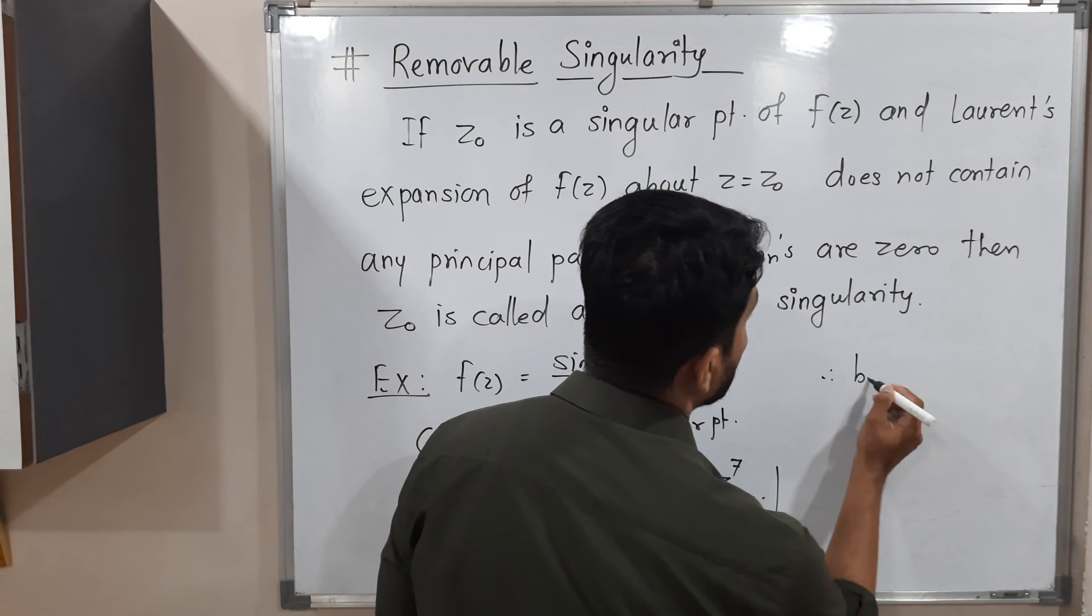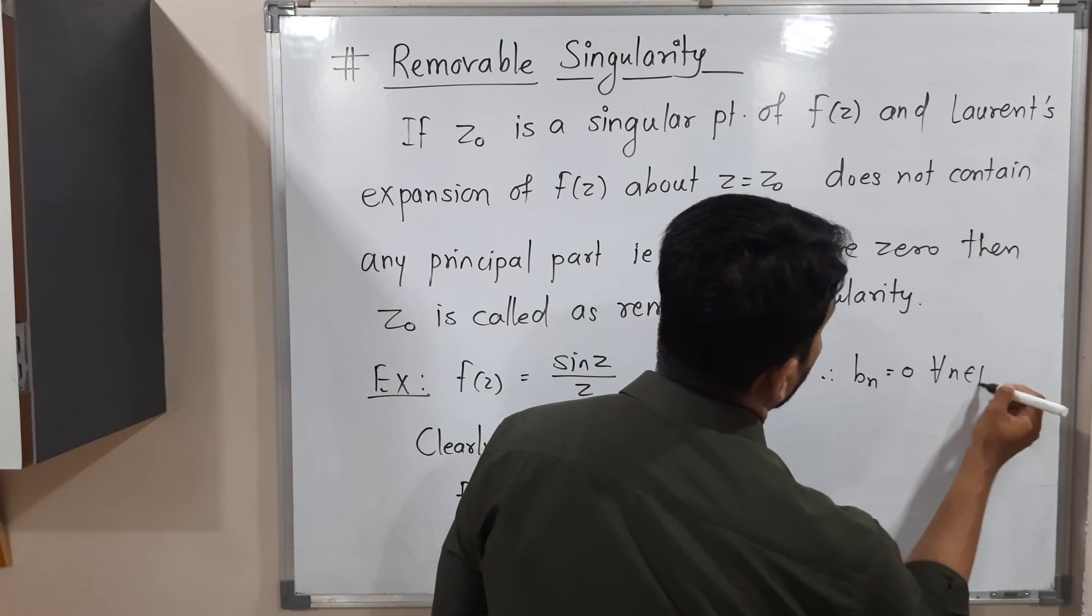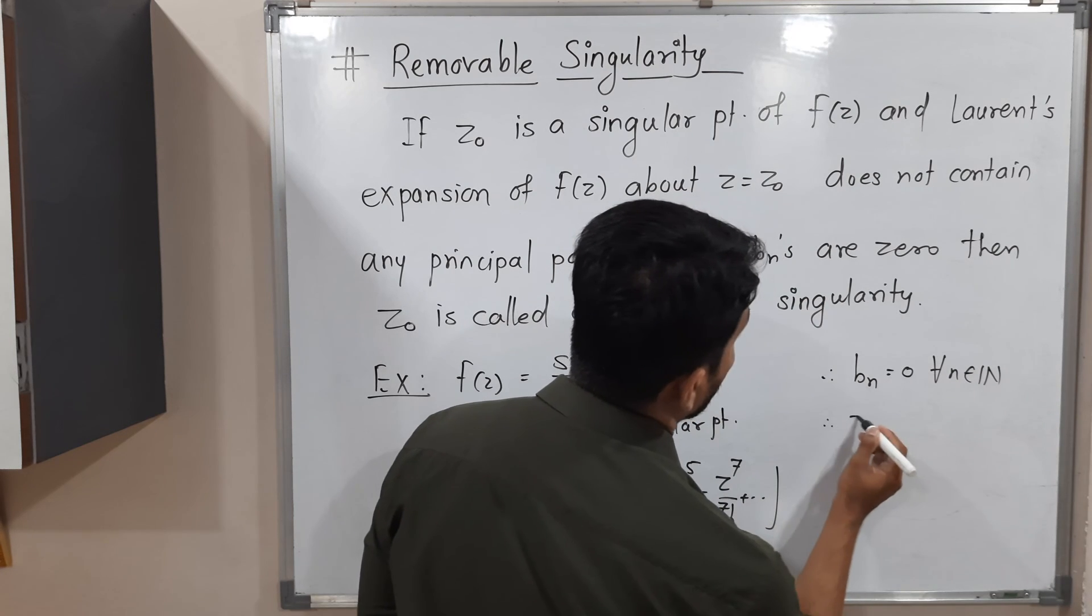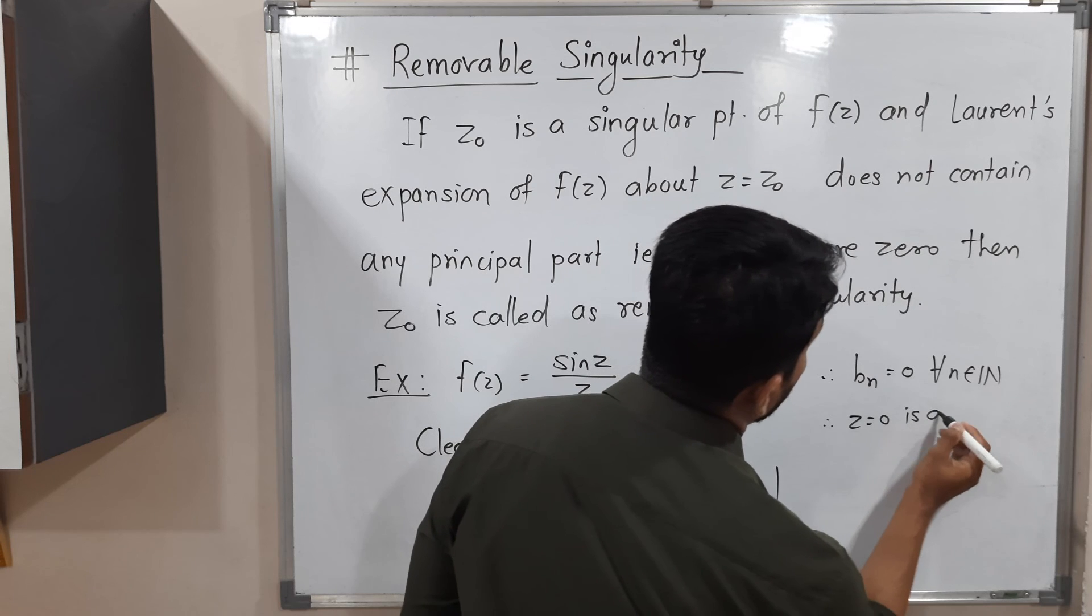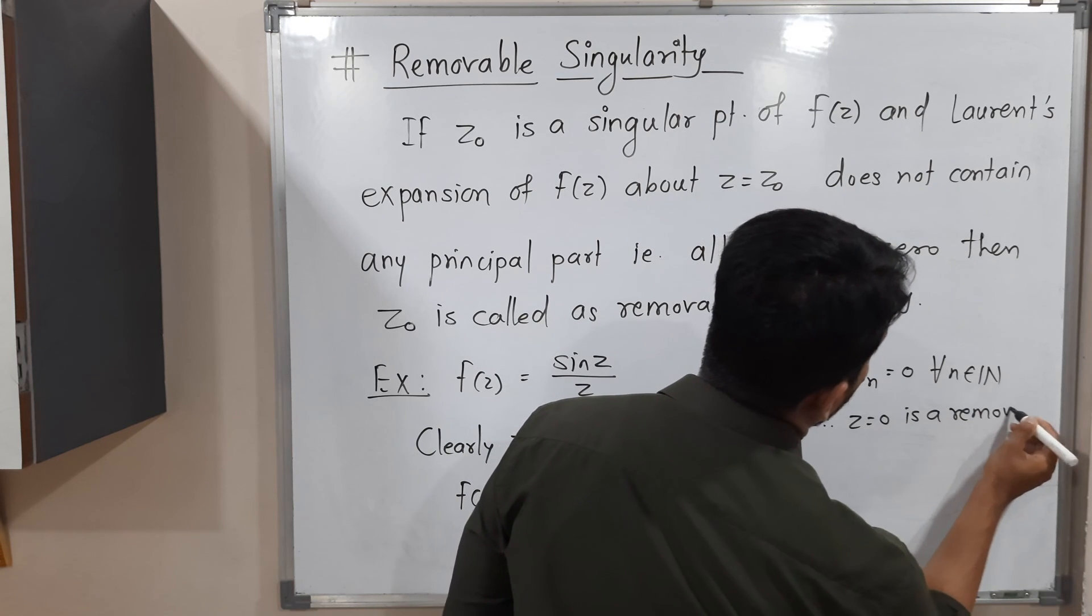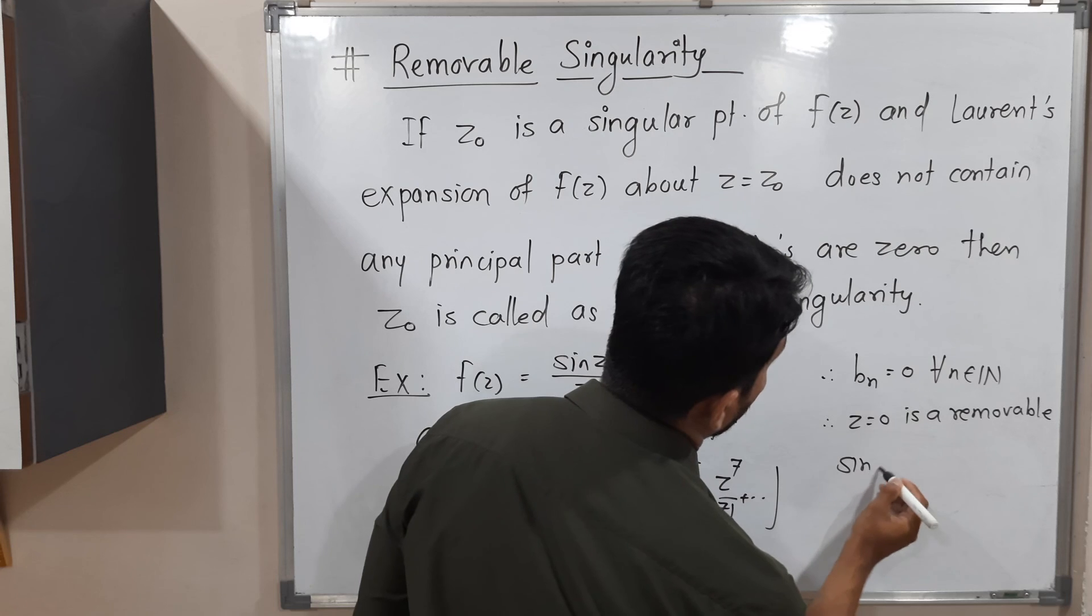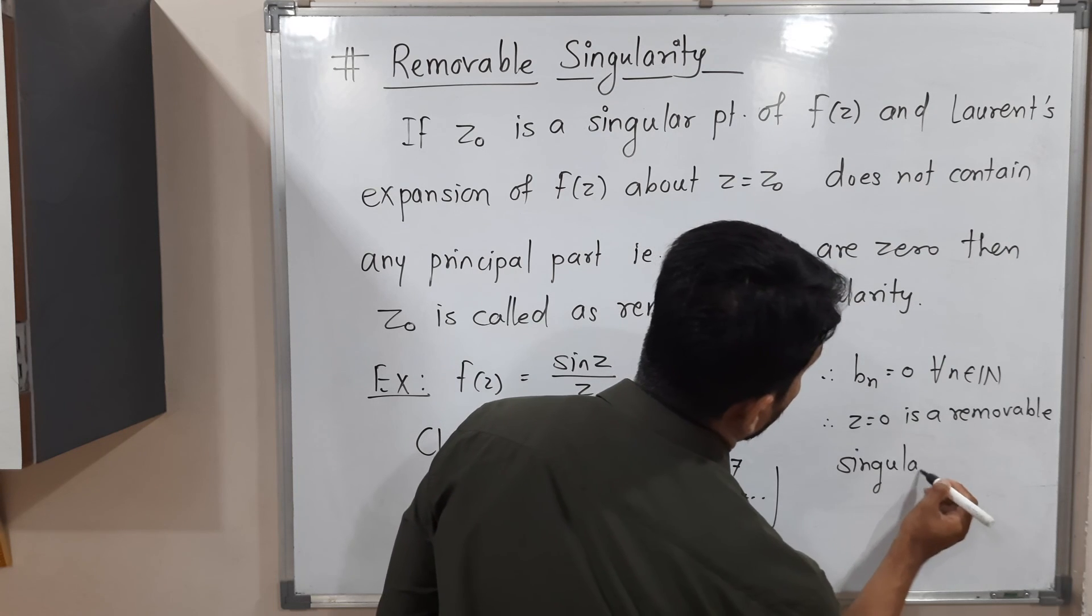So therefore, bn equals 0 for all n. So therefore, z equals 0 is a removable singularity.